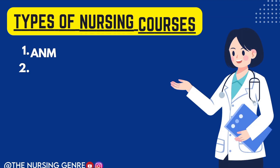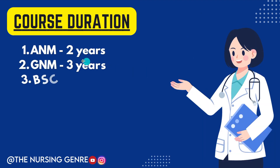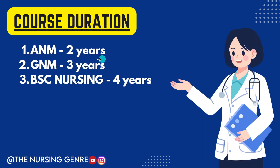First of all, types of nursing courses. There are three types of nursing courses. First, ANM is Auxiliary Nurse Midwife. Next, GNM is General Nursing Midwife. Third one is BSc Nursing. These are the three kinds of nursing courses. ANM duration is 2 years, GNM is 3 years, and BSc Nursing is 4 years.